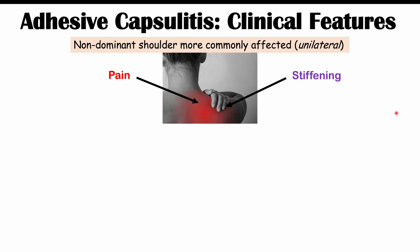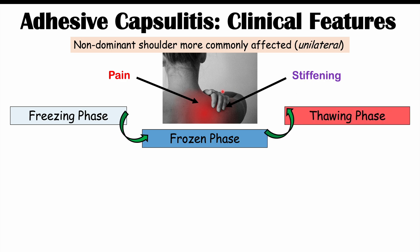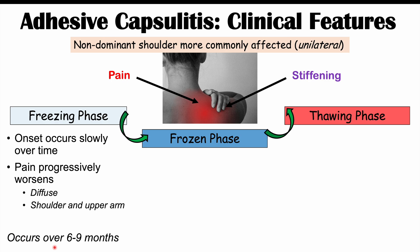The three phases of adhesive capsulitis are the freezing phase, the frozen phase, and the thawing phase. In the freezing phase, as the name implies, onset is slow over time, involving progressively worsening diffuse pain located over the outer shoulder and upper arm. This phase typically occurs over six to nine months and corresponds to inflammation of the joint capsule.